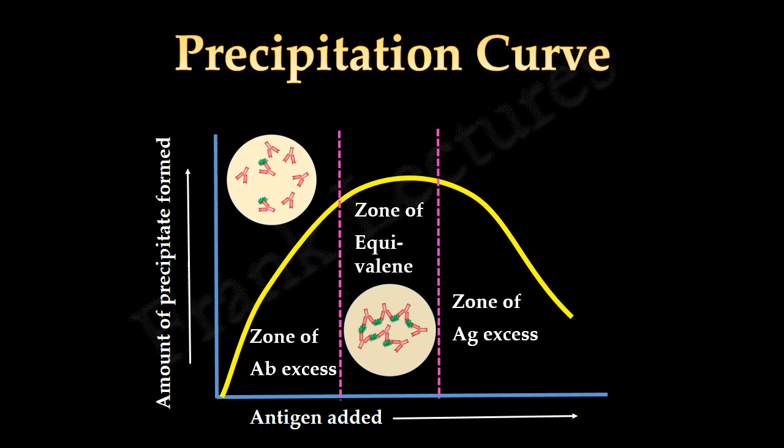In the zone of equivalence, the antigens and antibodies are in optimal concentration. So maximum amount of lattice formation takes place, and maximum precipitation occurs in this zone.